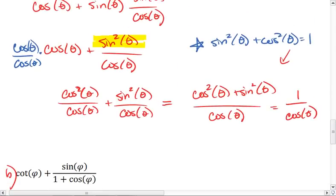This is a reciprocal. So we need to remember that secant is 1 over cosine. Thus, our final answer is secant theta.